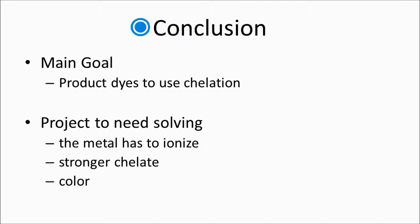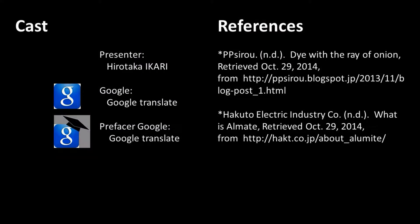Project 2 needs to be solved. For example, whether it is possible to coordinate a stronger chelate, and what color results when we dye metals using chelates other than quercetin chelation.